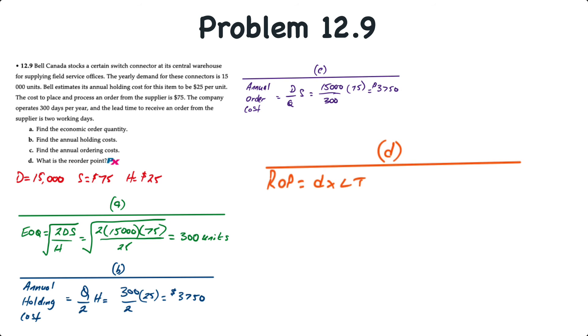Requirement D is to determine the reorder point. The formula for that is the daily demand, or little d, times the lead time. The daily demand, little d, is equal to big D, or the annual demand, divided by the number of working days. And we multiply that by the two-day lead time. 15,000 divided by 300 is 50 days times 2 gives us 100 units.